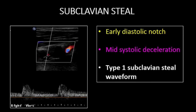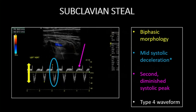Moving centrally in the body, we're going to look at progressive ultrasound changes with progression of subclavian arterial disease. This is an early imaging manifestation of subclavian steal phenomenon. The more prominent waveform abnormality is an early diastolic notch. Harder to see but still present is a mid-systolic deceleration — a type 1 subclavian steal waveform. This spectral doppler tracing of a left vertebral artery shows an atypical biphasic morphology with a key mid-systolic deceleration, representing a sudden sharp flow deceleration during peak systolic velocity reflecting a drop in pressure at the stenotic segment of the subclavian artery. A second but diminished systolic peak will subsequently be seen, representing a type 4 waveform.